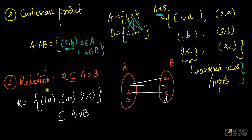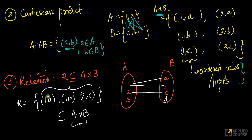This relation R is a subset of A cross B. In A cross B you will have all 12 ordered pairs — 3 elements times 4 elements. Amongst all those 12 pairs, I have taken a set of just 3 pairs, and that forms the relation. That is what a relation is — simply a subset of the Cartesian product.